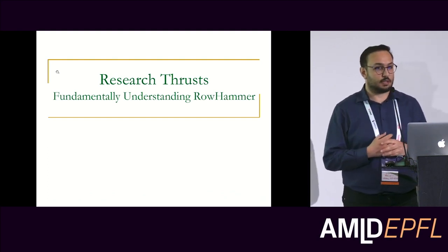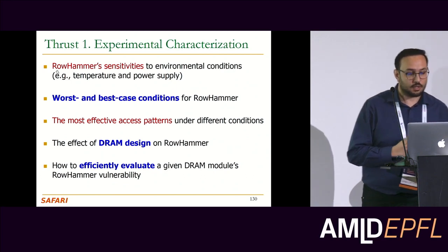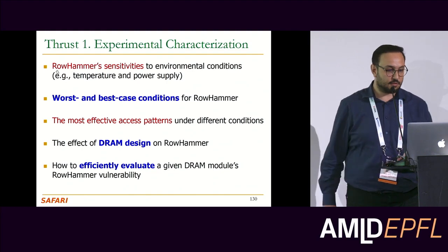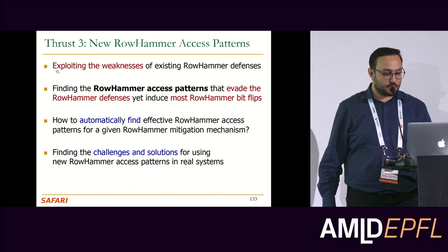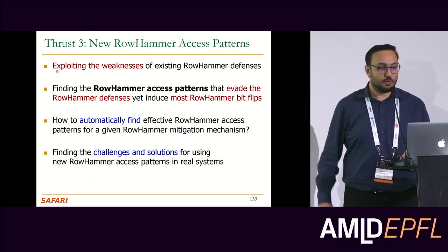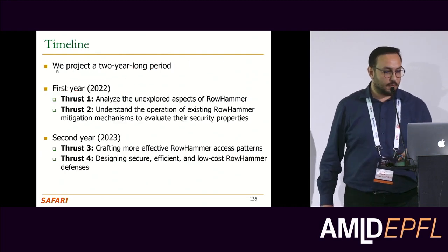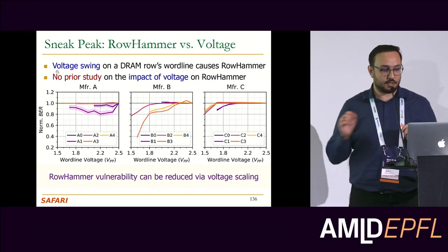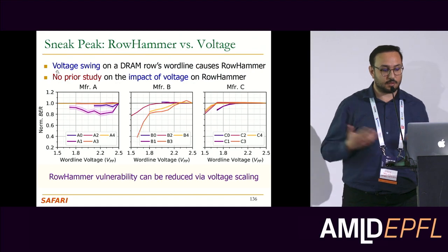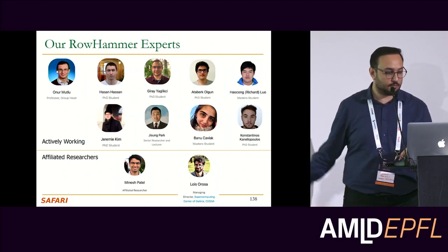Now I'll talk about our proposal briefly. The research questions we are targeting include: reverse engineering more of the mitigation mechanisms implemented, understanding Rowhammer characteristics more, looking at Rowhammer access patterns that can defeat existing mechanisms, and finding new Rowhammer solutions. As a sneak peek of our upcoming paper, we look at how Rowhammer changes with voltage and show that Rowhammer vulnerability can be reduced via voltage scaling — to be published in an upcoming DATE conference.